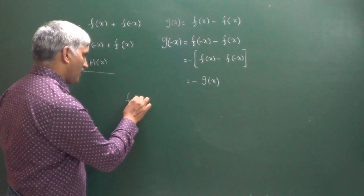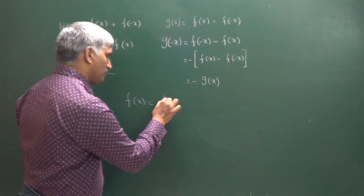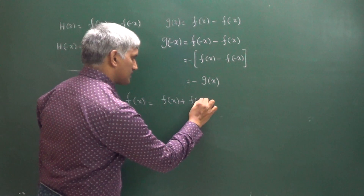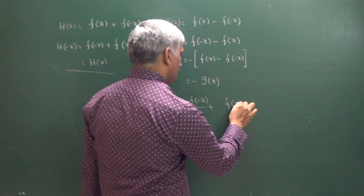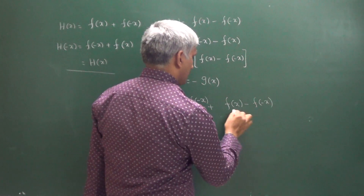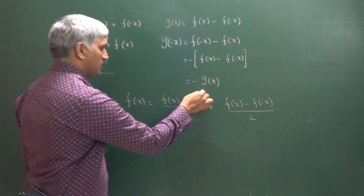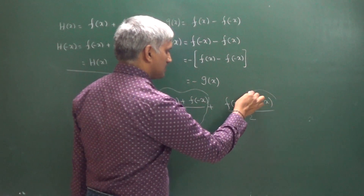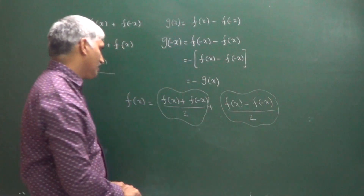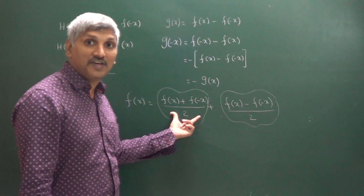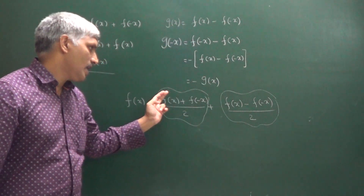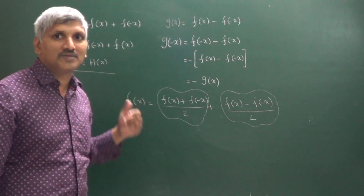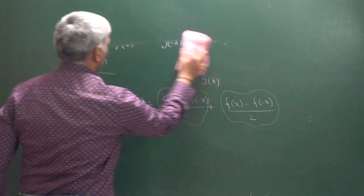From this we can say that f of x can be expressed as the sum: f of x plus f of minus x divided by 2, plus f of x minus f of minus x divided by 2. The first part is an even function and the second part is an odd function. That means every function can be expressed as the sum of an even and an odd function.